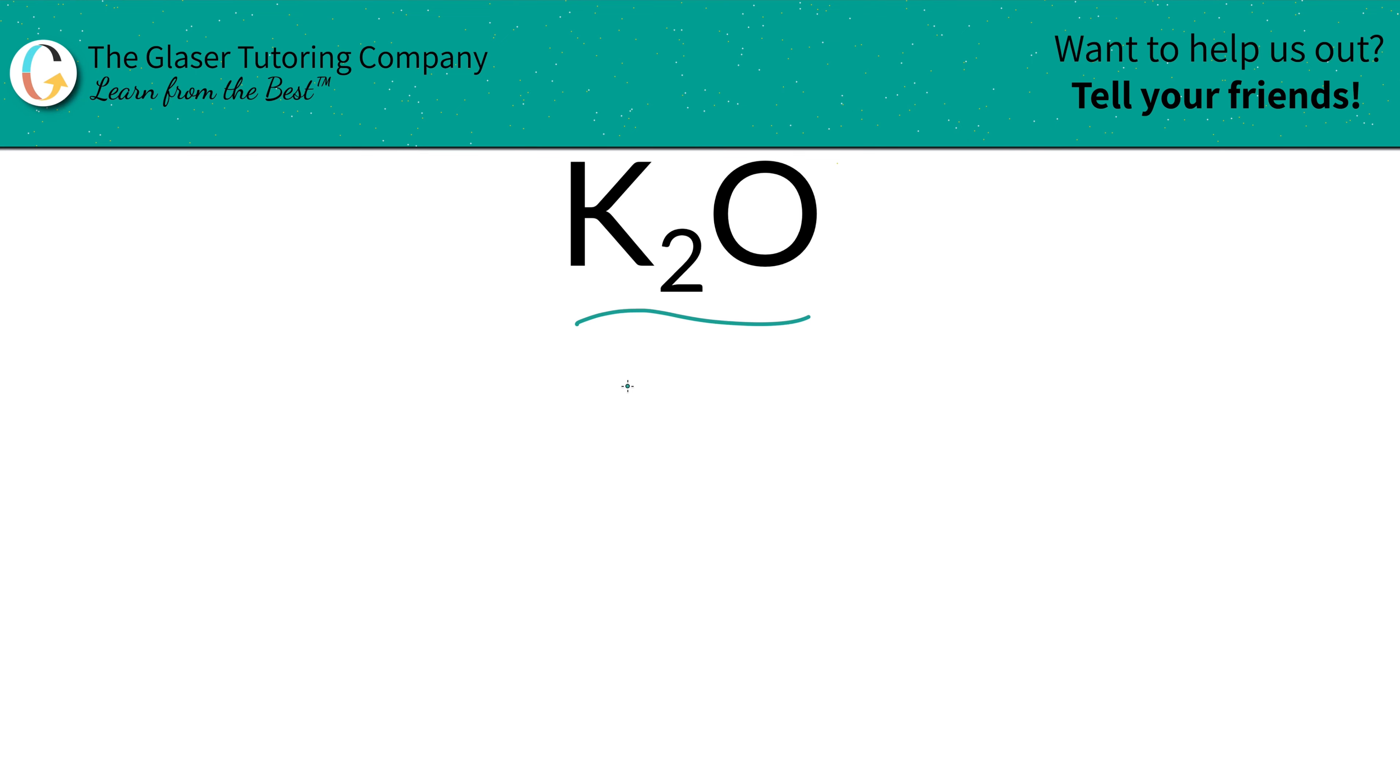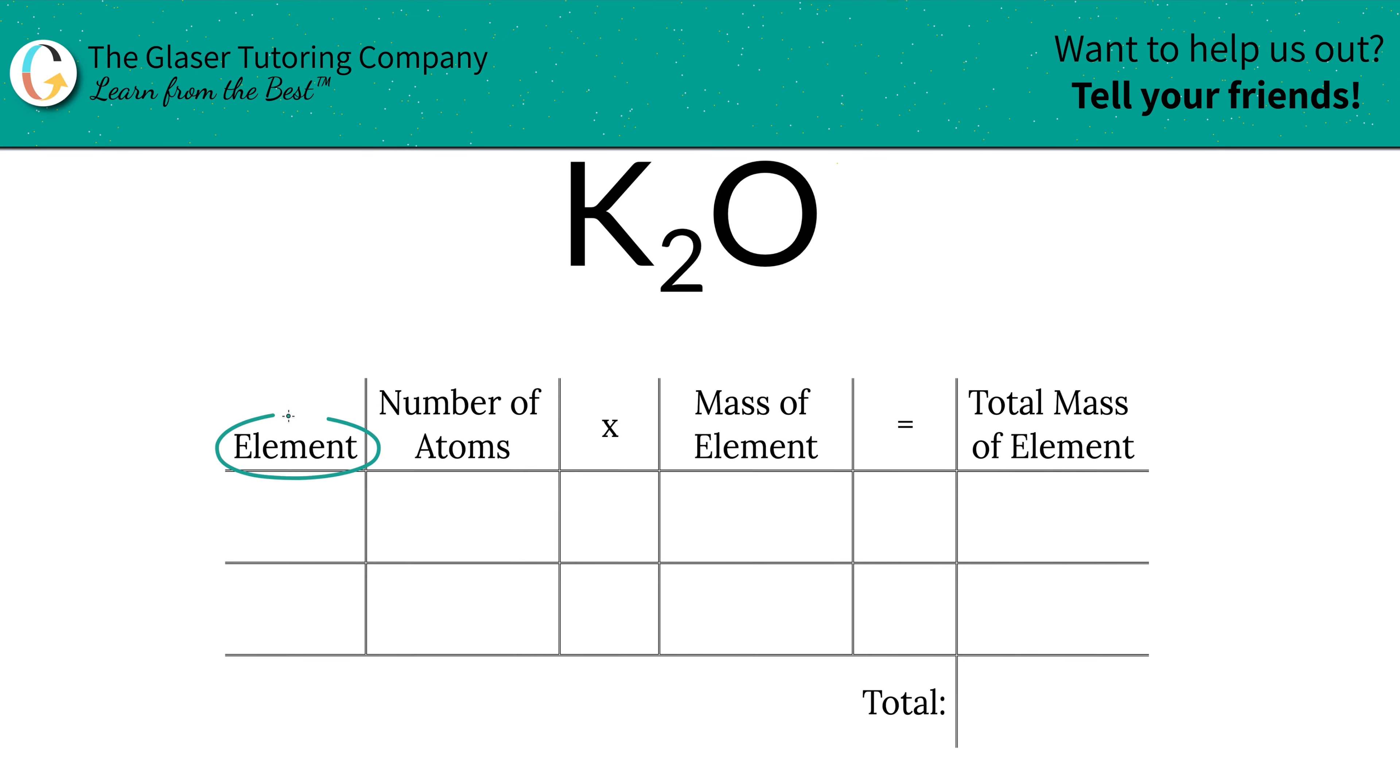I've created a nice little table to help us out. Watch how quick and simple this is. So the first step is we're going to write down the elements we see in the compound. So we have potassium, we have oxygen.